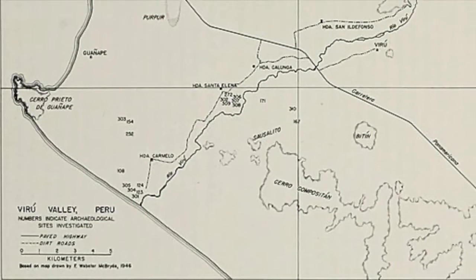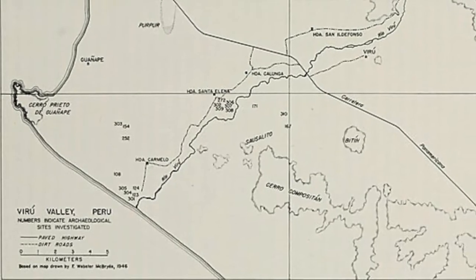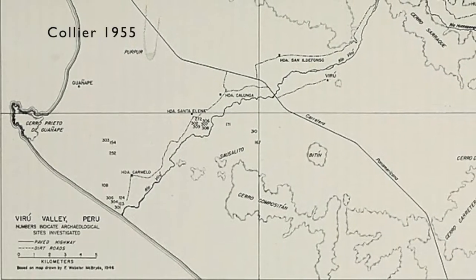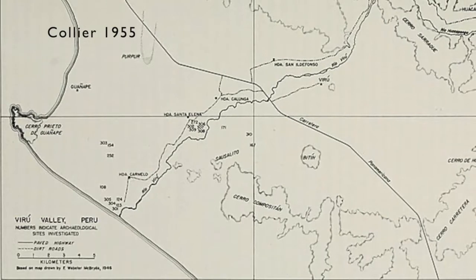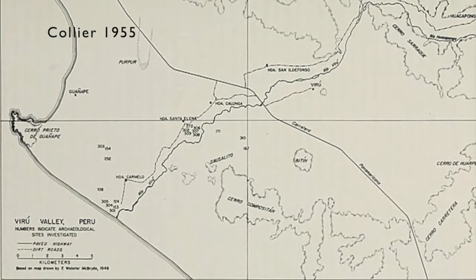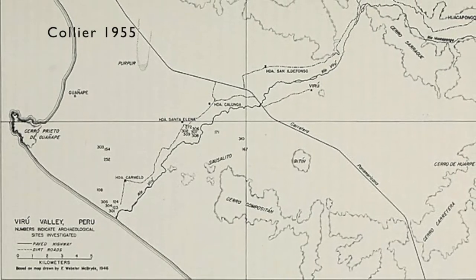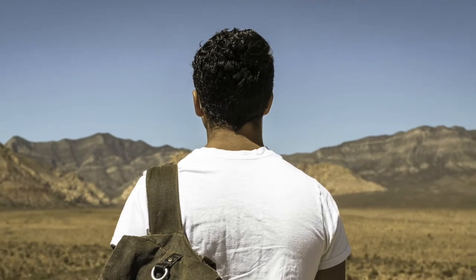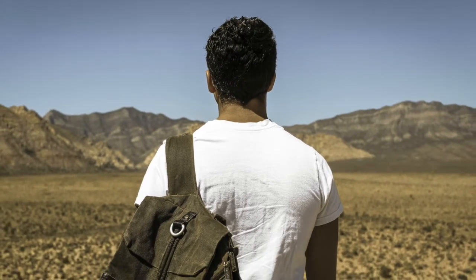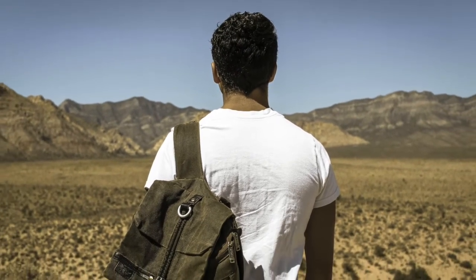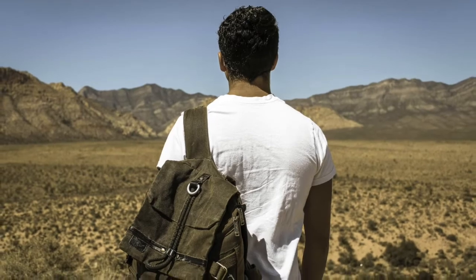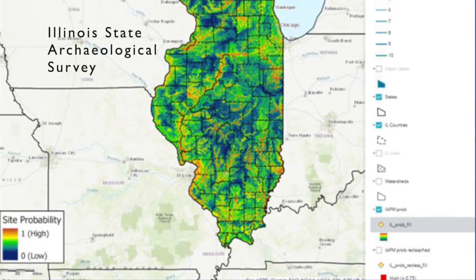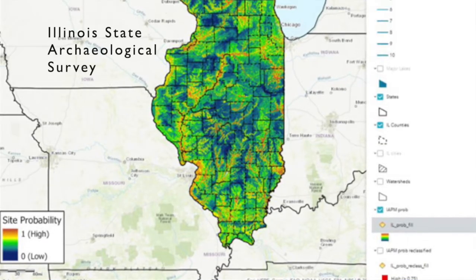In addition, it can give us evidence about activities that took place outside of these sites, for example by identifying places where certain kinds of intensive agriculture took place. Especially when they include a geoarchaeological component, surveys can also tell us something about changes to landscapes over time. And today, archaeological survey is extremely important in heritage management.